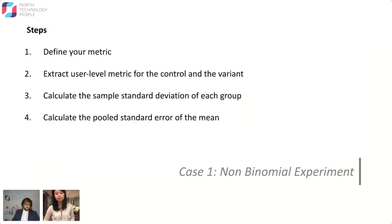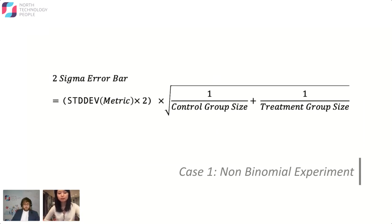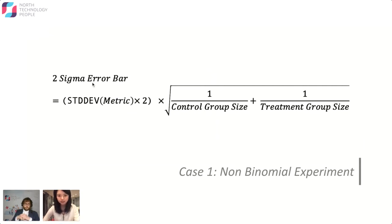The way I set up the experiment: first, define your metric — in this case it was incremental revenue per user. Then extract the user-level metric for your control and variant groups — the control group are users who do not receive the offer, and the variant group are those who do. Calculate the sample standard deviation of each group, then calculate the pooled standard error of the mean. You compare this error bar to your pre-calculated projected incremental revenue per user. If your error bar is greater than or equal to your metric, you don't have significance; if it's less, you do. You can use two sigma for a two-sigma error bar, or three for three sigma.